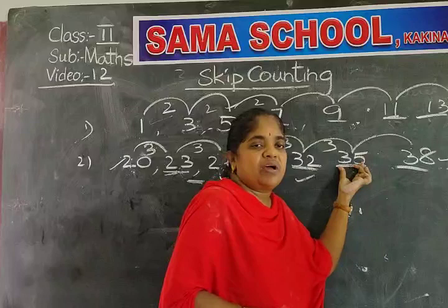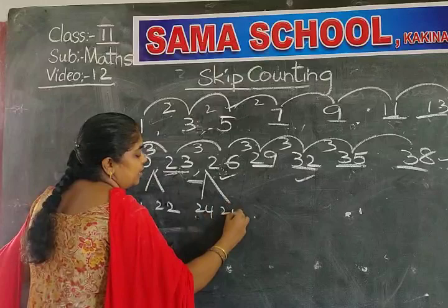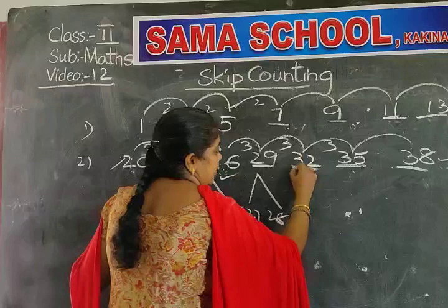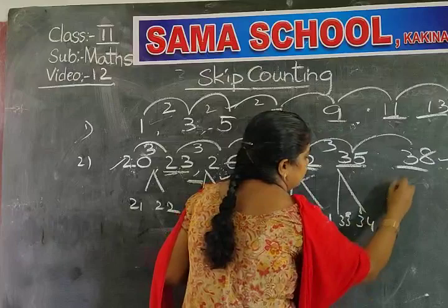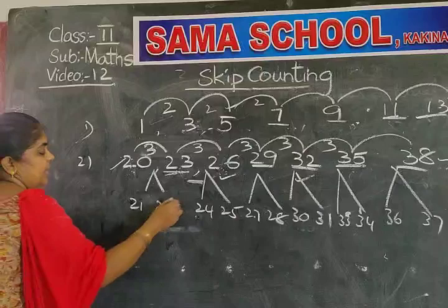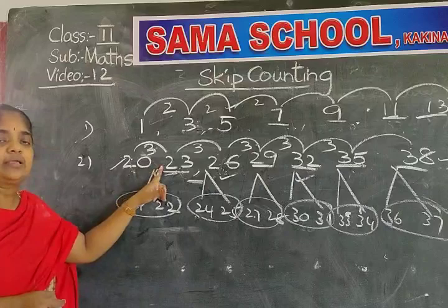See which numbers we are not writing: 21, 22; 24, 25; 27, 28; 30, 31; 33, 34; 36, 37. We are skipping two numbers and writing the third number. Like that, we completed this example.